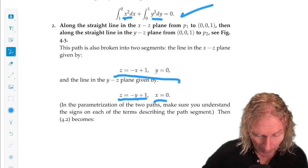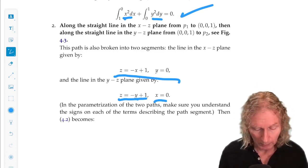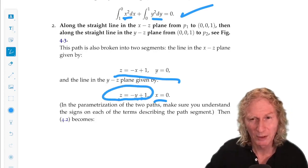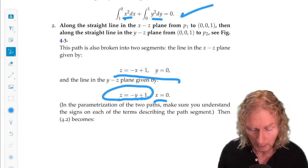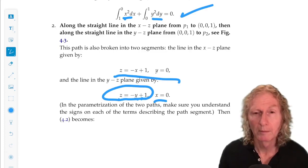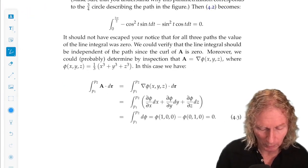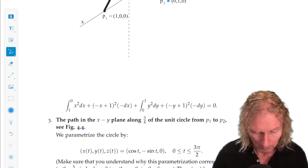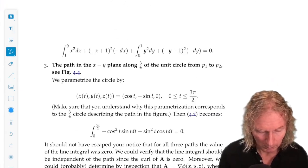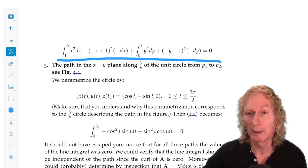A little more involved than the first one, but we plug these quantities into the general expression for the line integral. And we get 0 again.